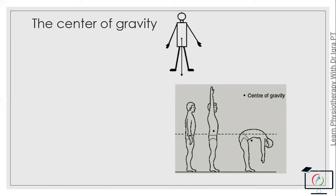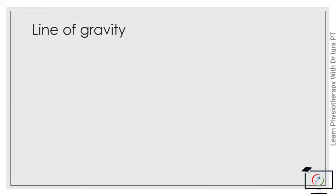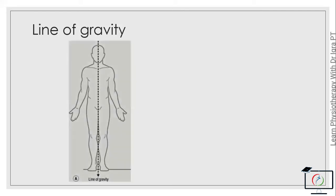Now the line of gravity. The line of gravity is a vertical line passing through the center of gravity. For a human body in an anatomical position, it is the line that passes through the center of gravity, starting from the vertex and ending at a point between the feet.